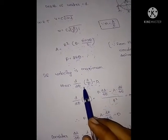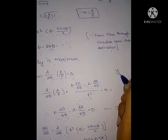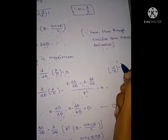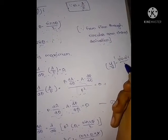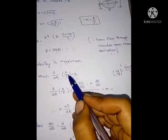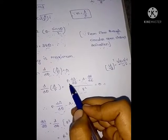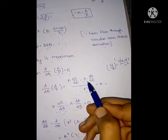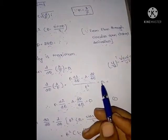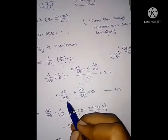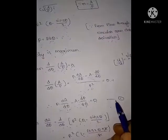This is in the form of U/V, so applying the quotient rule: (U/V)' = (V·U' − U·V') / V². Substituting, we get: [P·(dA/dθ) − A·(dP/dθ)] / P² = 0. Moving P² to the other side gives: P·(dA/dθ) − A·(dP/dθ) = 0. Consider this as equation 1.